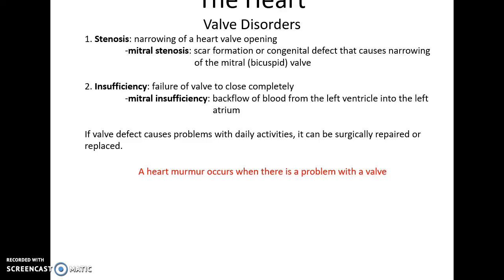Valve disorders include stenosis, which is a narrowing of the heart valve. For instance, mitral stenosis involves scar tissue or a congenital defect narrowing the bicuspid valve, making it harder for blood to pass through. There is also insufficiency, where the valve fails to close completely, causing backflow of blood into the atria or ventricle. Valve defects are usually observed unless they cause problems with daily activities, in which case they may be surgically repaired or replaced. A heart murmur is a slightly different sound to the heartbeat that signals some sort of valve issue.